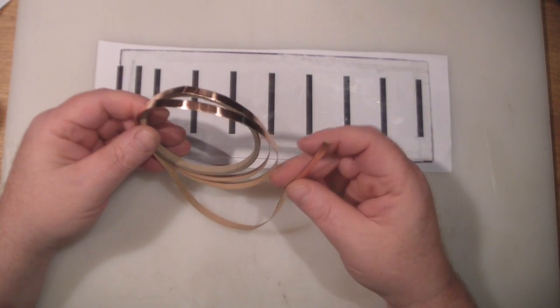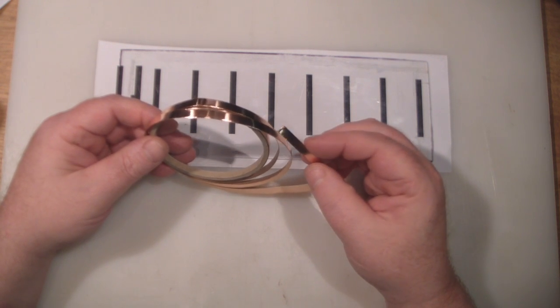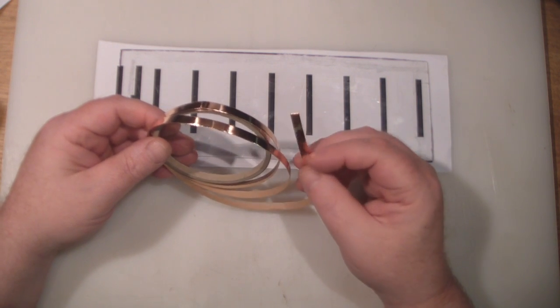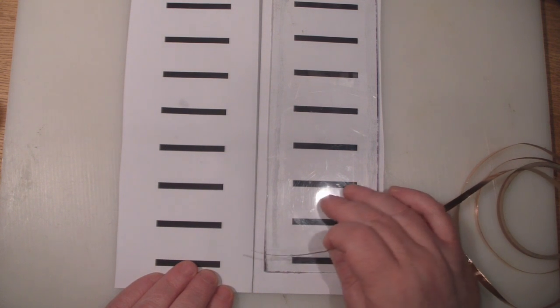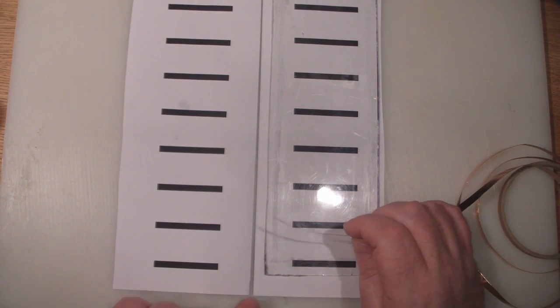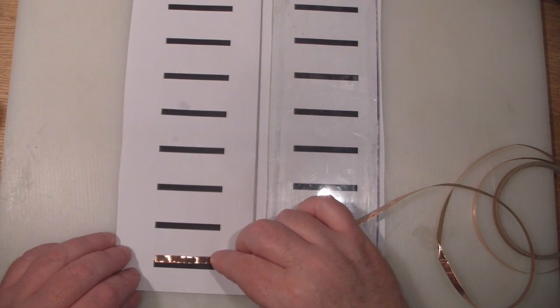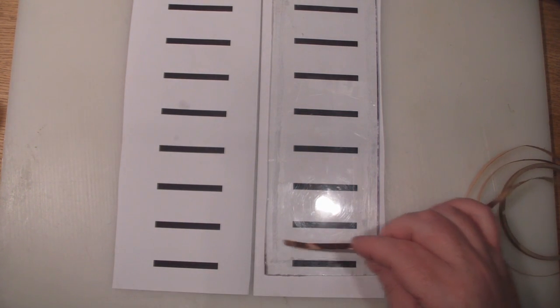So what I'm going to use to make the elements is this copper tape. It has a sticky back that you can peel off, and also what's good about this is you can solder to it. So we're going to use the second template now, the one that we saved from when we cut it in half. I'm going to use the paper one to actually measure off the lengths of the elements. I just find it much easier to measure off on this one and then transfer it over to the plexiglass.